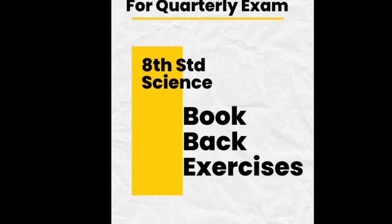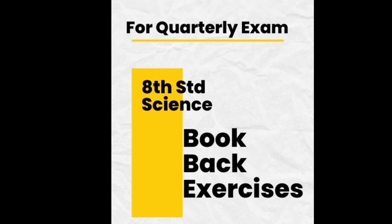10 units: measurements, force and pressure, light, heat, changes around us, matter around us, and air. And finally, in biology: micro-organisms, plant kingdom, and organization of life. All these 10 lessons — choose the correct answer — will be in a PDF.